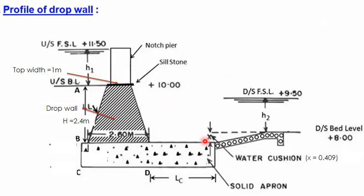The figure now shows the designed drop wall: base width 2.6 m, top width 1.0 m, height 2.4 m. The solid apron or cistern floor is shown below. The top of the cistern floor is at 7.6 m, which equals downstream bed level (8 m) minus the water cushion depth (0.4 m). Next, we need to find the length of the cistern and its thickness.